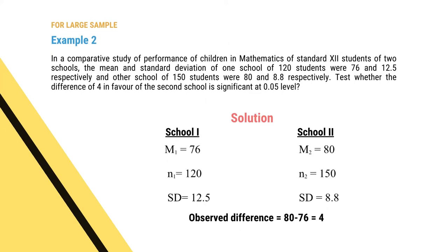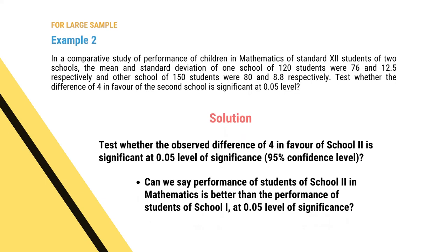Analyzing the question: School 1 has M1 = 76, N1 = 120, standard deviation = 12.5. School 2 has M2 = 80, N2 = 150, standard deviation = 8.8. The observed difference M2 − M1 = 4 in favor of school 2. We test at 0.05 level of significance (95% confidence). Applying the formula: SED = √(σ1²/N1 + σ2²/N2) = √(12.5²/120 + 8.8²/150) = √(1.30 + 0.52) = √1.82 ≈ 1.34. Then Z = D / SED = 4 / 1.34 = 2.98.